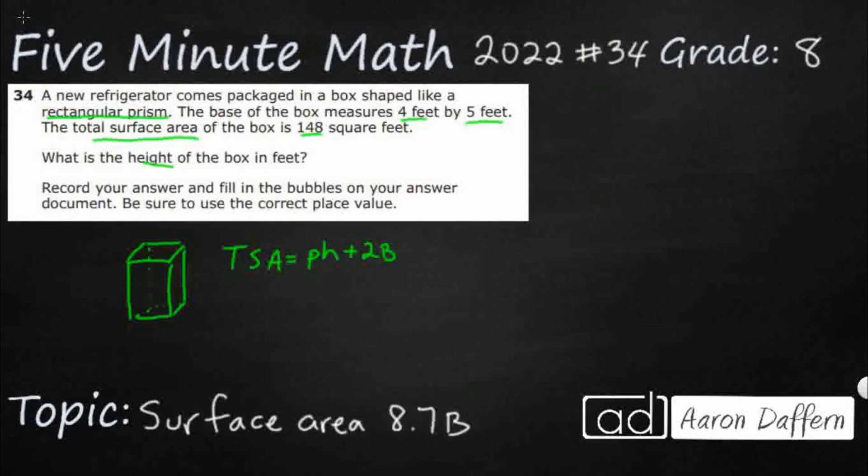So what we need to find is the perimeter of the base. All right, so since we've got a 4 by 5, really what we're looking for is the height, but all they give us is the 4 by 5.